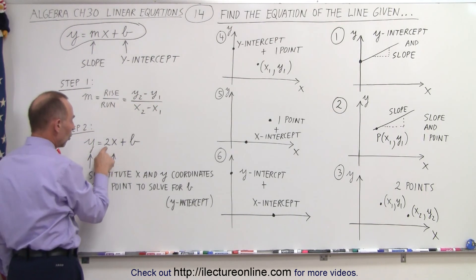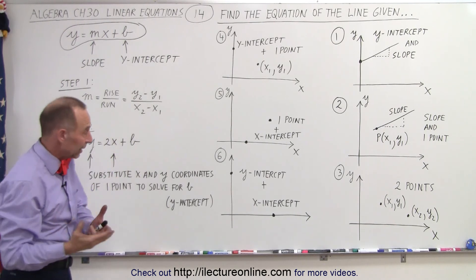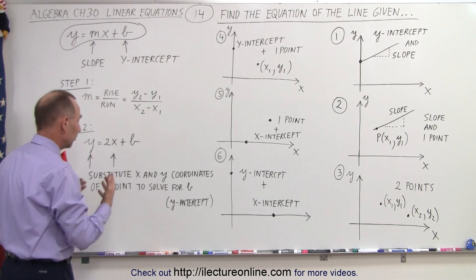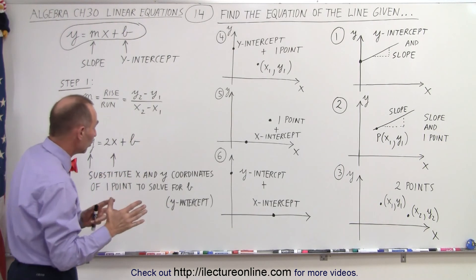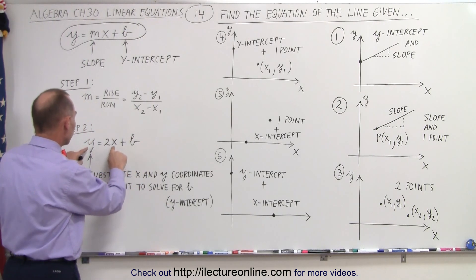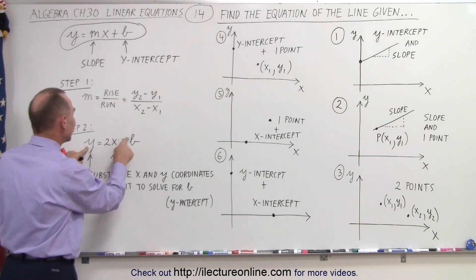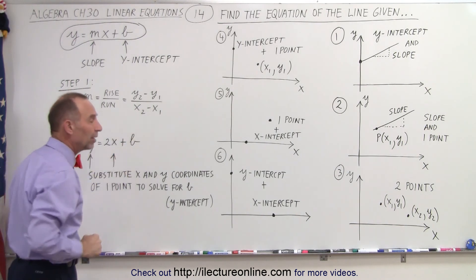The second thing you're going to do, once the slope is calculated, let's say the slope is two, whatever it may be, then simply take the values, the x and y coordinates of the point, and plug them in for y and x here, and then you solve for b, which gives you the y-intercept.